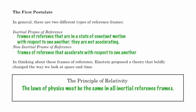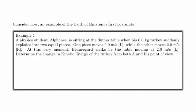Let's take a look at an example. A physics student, Alphonse, is sitting at a dinner table, and his six-kilogram turkey suddenly explodes into two equal pieces. One piece moves two meters per second to the left, while the other moves two meters per second to the right. Another student, Beauregard, walks by the table moving at two meters per second to the left. We'll determine the change in kinetic energy of the turkey from the perspective of Alphonse and from the perspective of Beauregard — two different inertial reference frames.